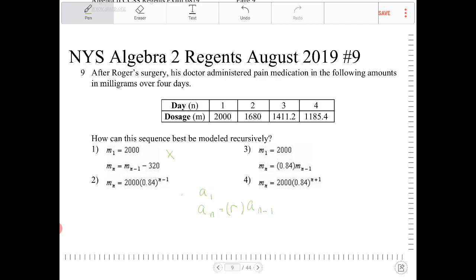Then we calculate the successive terms with a common ratio multiplied by the previous term. So you have to be given the starting value, the common ratio, and the recursive equation written in this manner.